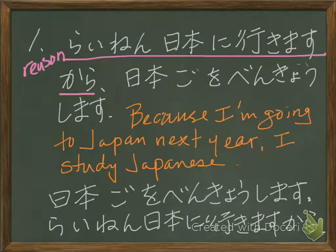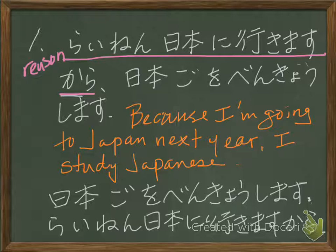Look at this example: 来年日本に行きますから、日本語を勉強します。 Kara expresses a reason. Look at the kara clause — this is a subordinate clause. 来年日本に行きます — this is the reason: 'Because I'm going to Japan next year.' And the resultant state: 日本語を勉強します — 'I study Japanese.'